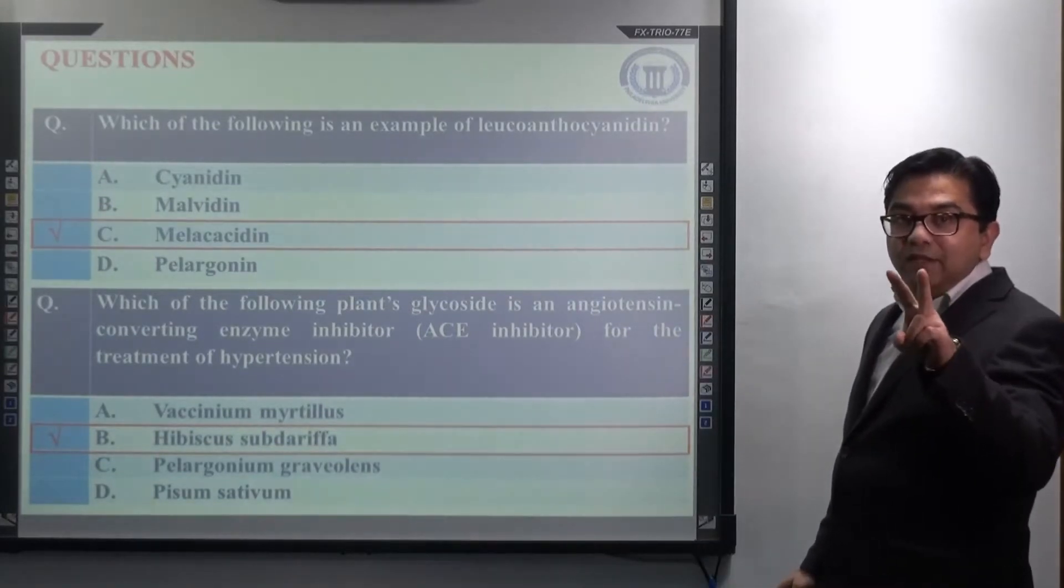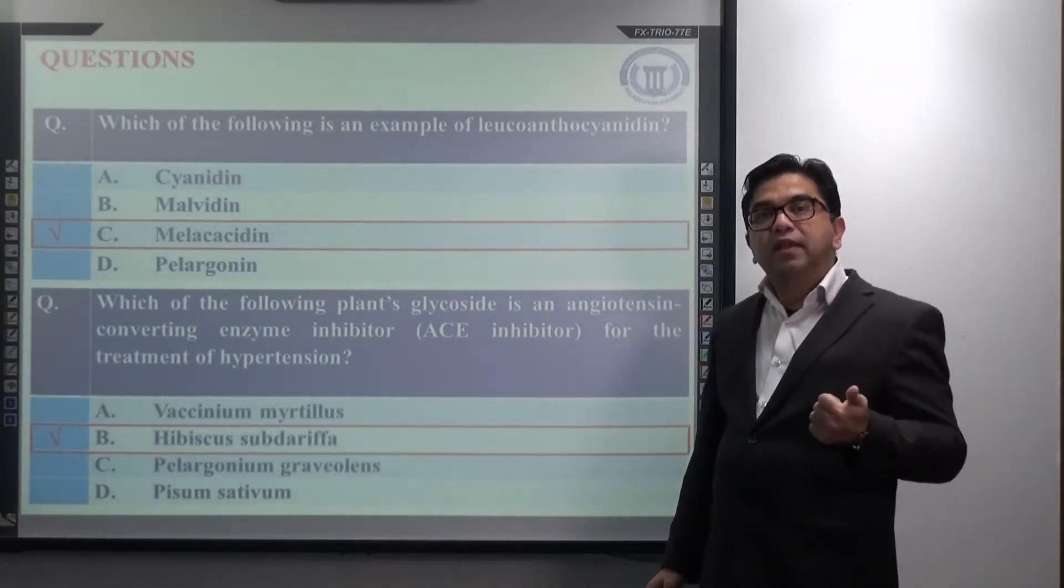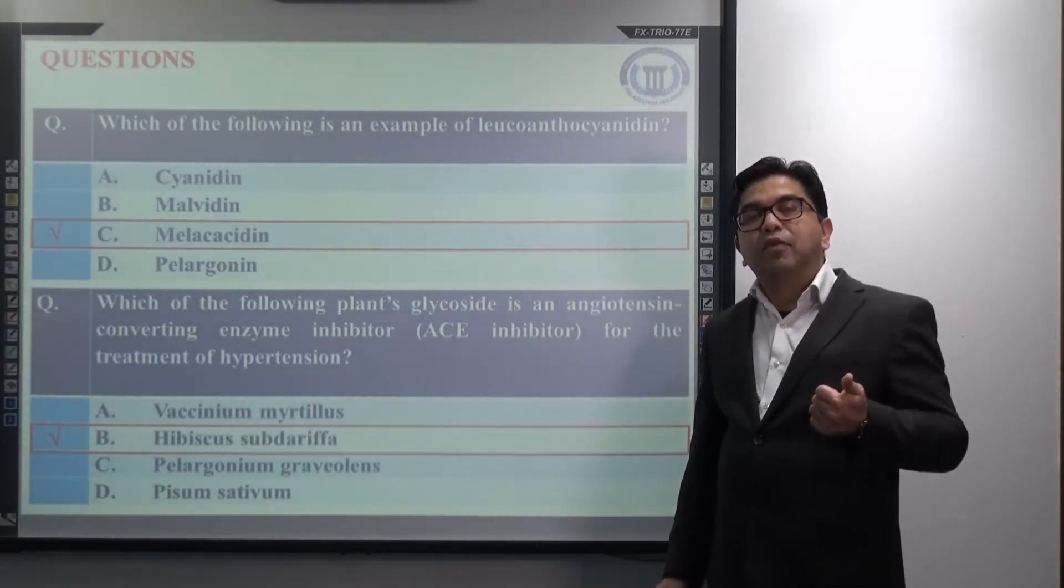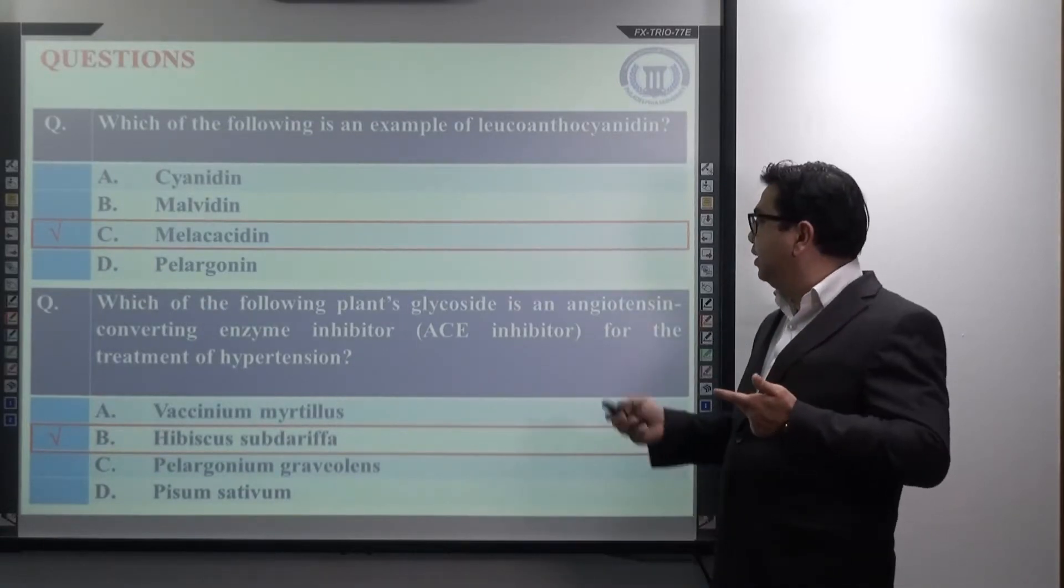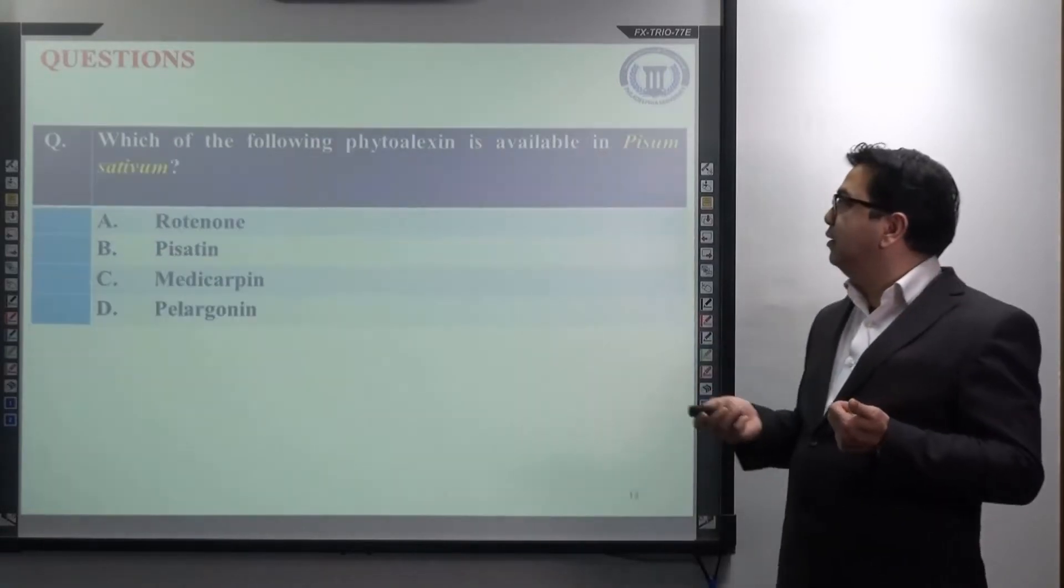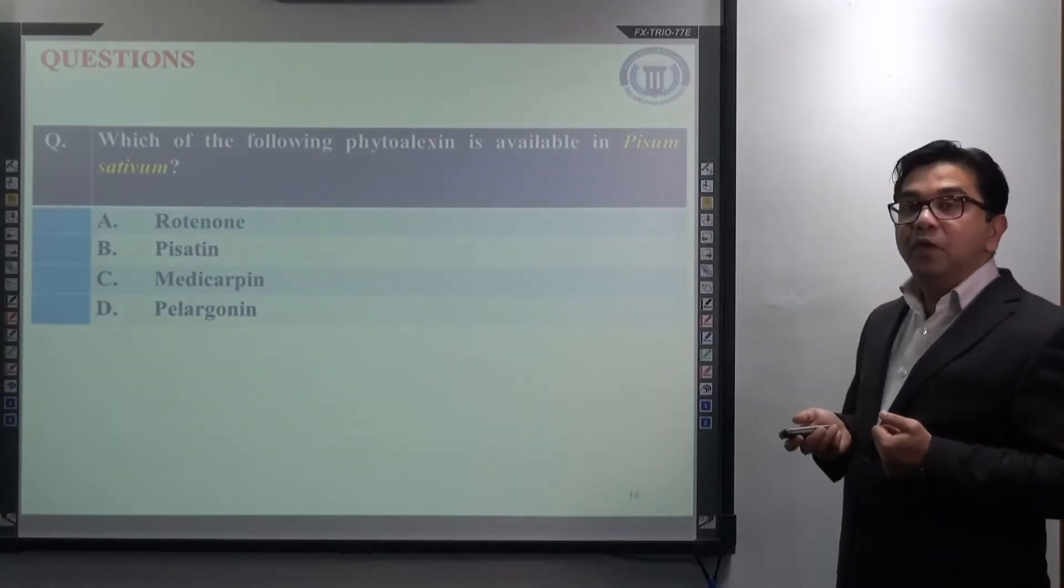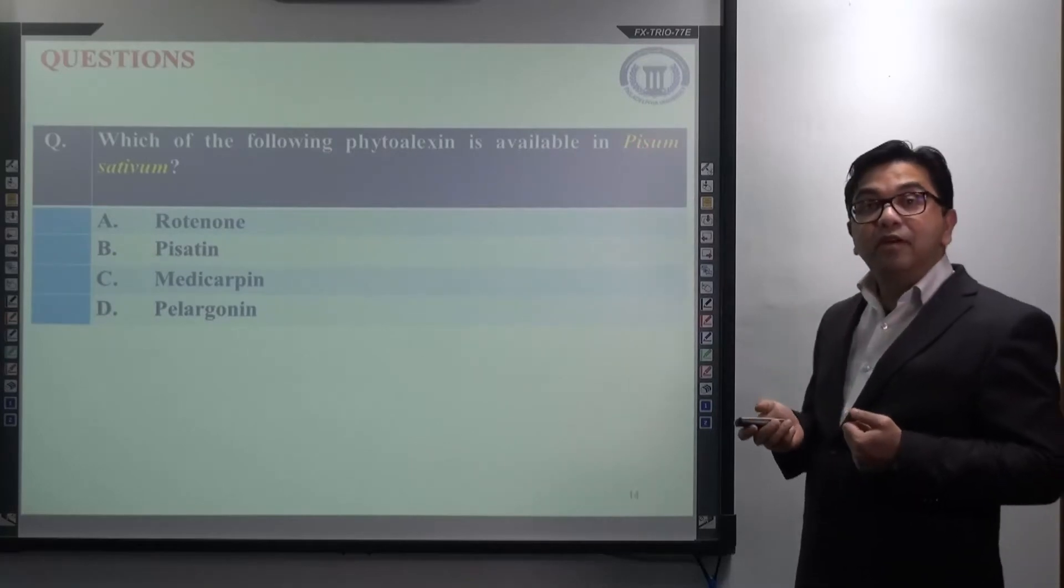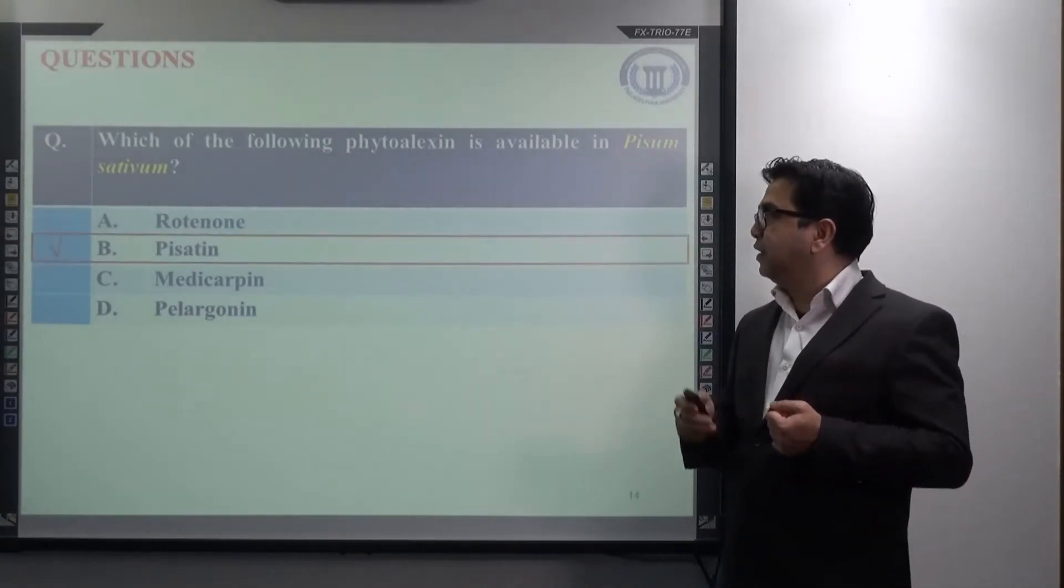And two anthocyanins, that is the glycoside of delphinidin and cyanidin, is mainly found to be responsible for the treatment of hypertension by inhibiting the enzyme ACE. The last question. Which of the following phytoalexin is available in Pisum sativum? Pisum sativum is the botanical name for pea plant. And the correct answer is pisatin.